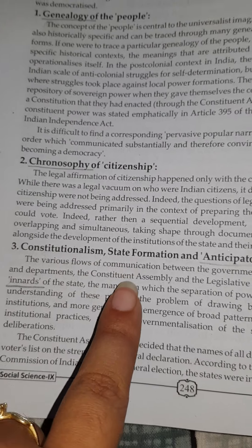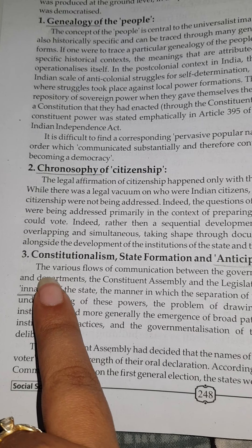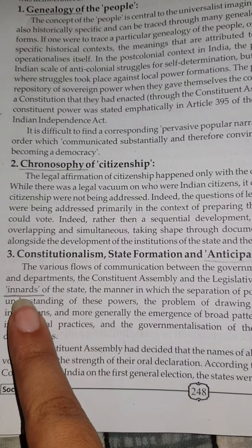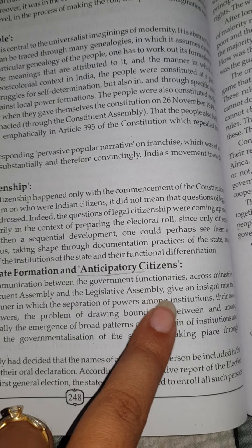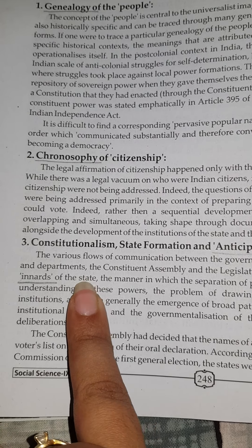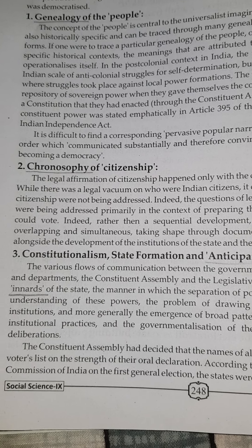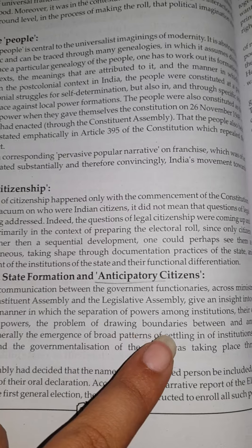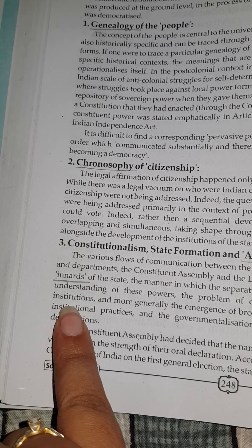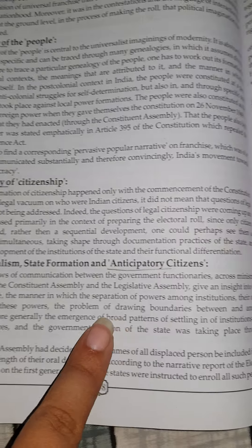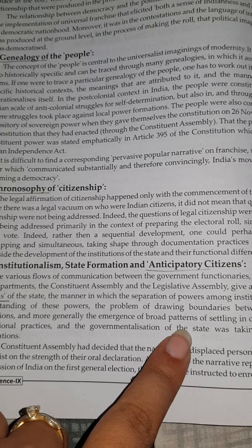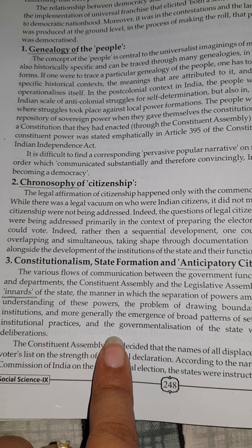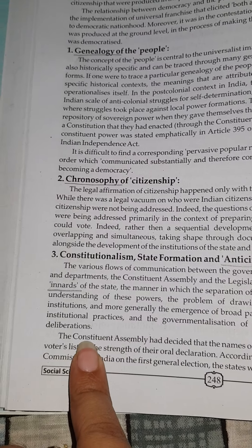Next is constitutional state formation and anticipatory citizens. The various flows of communication between government functionaries across ministries and departments, the constituent assembly, and the legislative assembly give an insight into the inner workings of the state — the inner organs or inner matter of any state. This includes the manner in which separation of powers among institutions, their understanding of these powers, the problem of drawing boundaries between them, and the broader emergence of institutional practices and governmentalization of the state through deliberation.